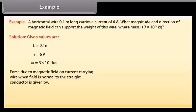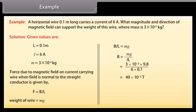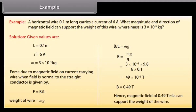The force due to the magnetic field on a current carrying wire when the field is normal to the straight conductor equals BIL. The weight of the wire is MG. Comparing these two equations: BIL = MG, so B = MG / IL. Putting in the values, B = 0.49 tesla. Hence a magnetic field of 0.49 tesla can support the weight of the wire.